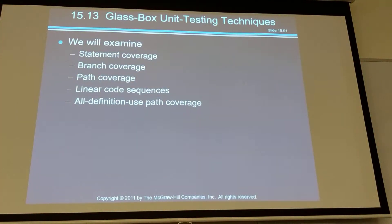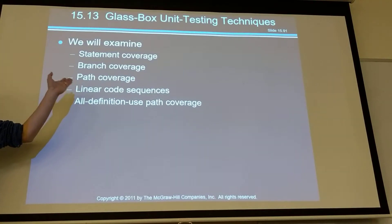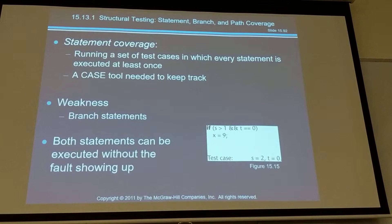The second one is called white box or glass box testing - this is really looking at your code. For this, you have more automation. This is not something we are going to focus on a lot in your test plan. You're encouraged to do so, but we're not going to ask you to set a coverage target. These are essentially what you hear about in code coverage test metrics. Number one is statement coverage - basically how many lines of code, what percentage of code you cover after running your program.